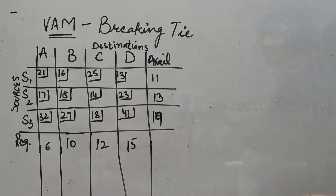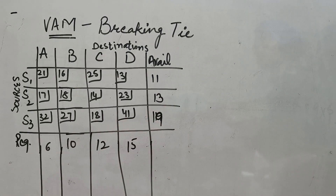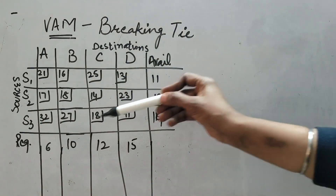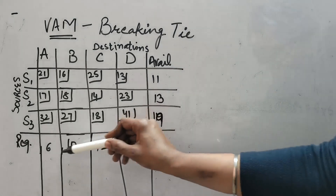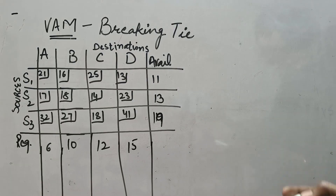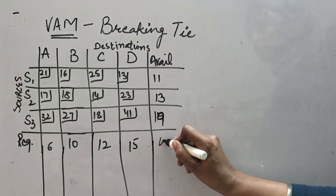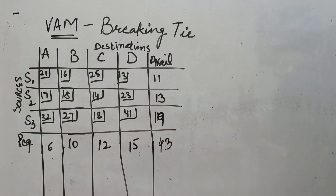First of all, you have to see whether the total of availability and requirement is coming out to be the same or not. As you can see in the question, we have four destinations A, B, C, D and three sources S1, S2, and S3. Adding from both sides: from this side it is 43, and from here also it is 43. So it is a balanced problem — there is no issue at all. We can start allocating with the help of unit penalties.